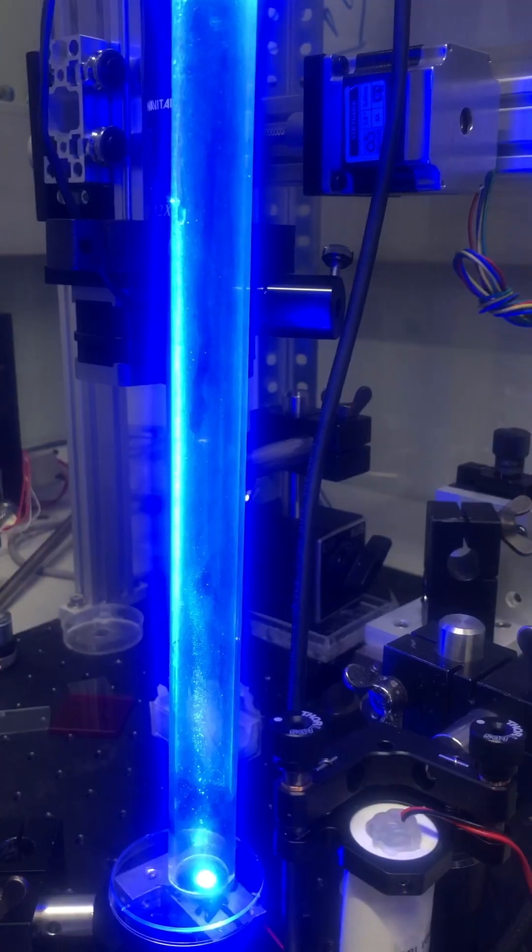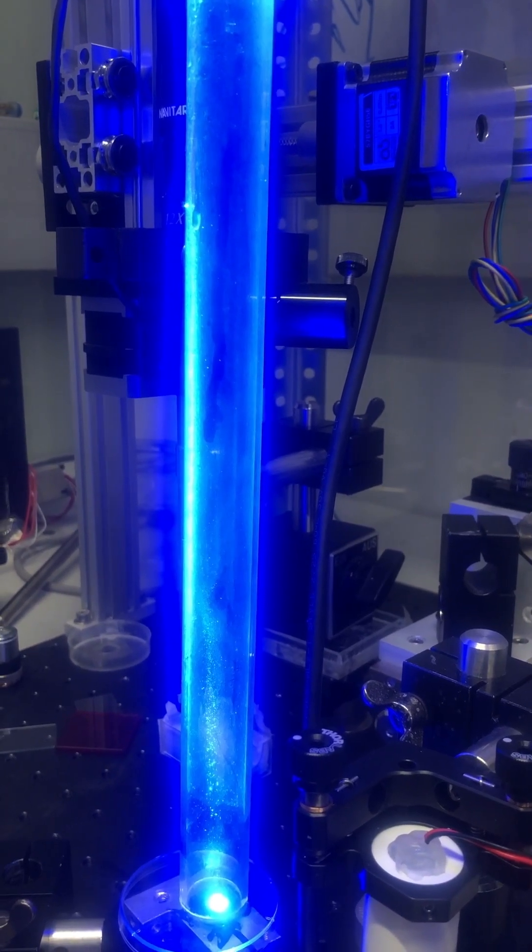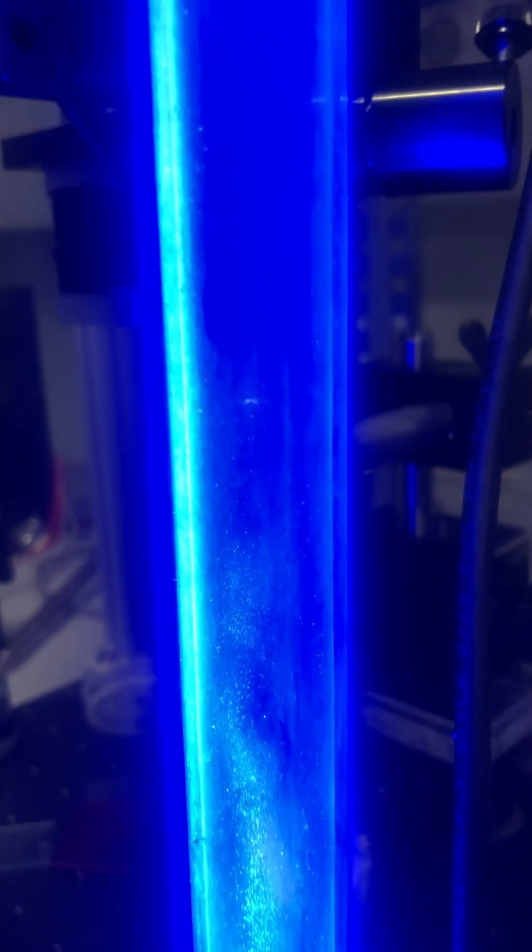Mist gets pushed towards the focus which is to the left side, but nothing gets trapped finally. This allows us to determine particle sizes, but we see a lot of small particles falling slower.